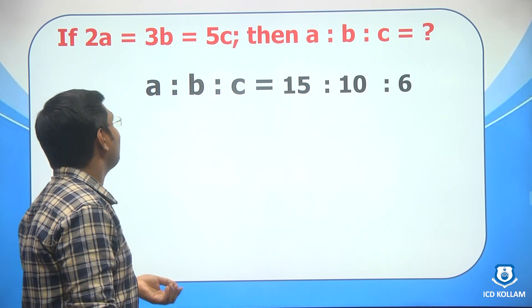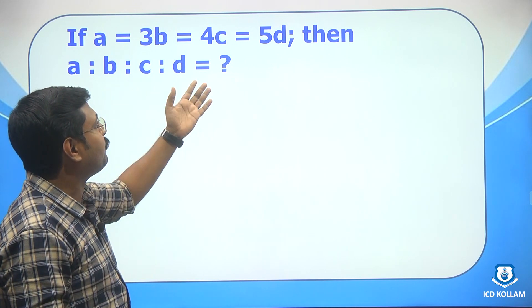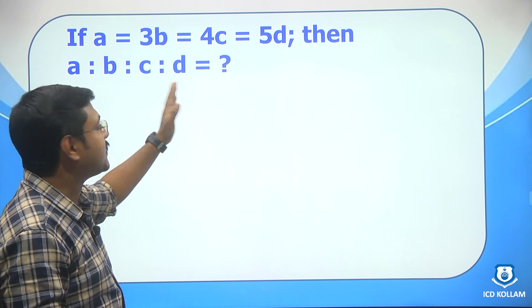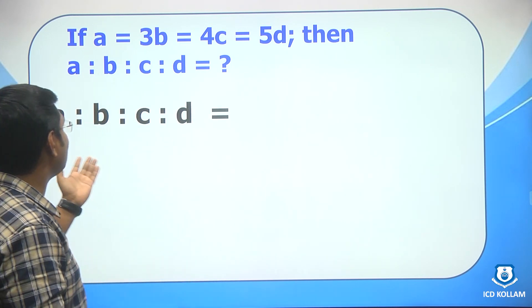Let us see one more question. If a is equal to 3b is equal to 4c is equal to 5d, then a is to b is to c is to d is equal to? Yes, here we need to find a is to b is to c is to d.